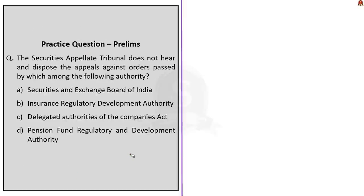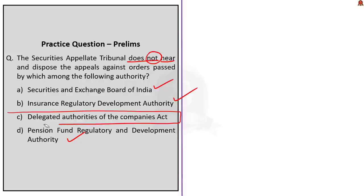Coming to the last question: The Securities Appellate Tribunal does not hear and dispose of appeals against orders passed by which among the following authorities? Option A — Securities and Exchange Board of India. Option B — Insurance Regulatory Development Authority. Option C — Delegated Authorities of the Companies Act. Option D — Pension Fund Regulatory and Development Authority. As we discussed earlier, the Securities Appellate Tribunal hears and disposes of appeals against orders passed by SEBI, PFRDA and IRDA. Therefore, the right answer is Option C — Delegated Authorities of the Companies Act — which the SAT does not hear.